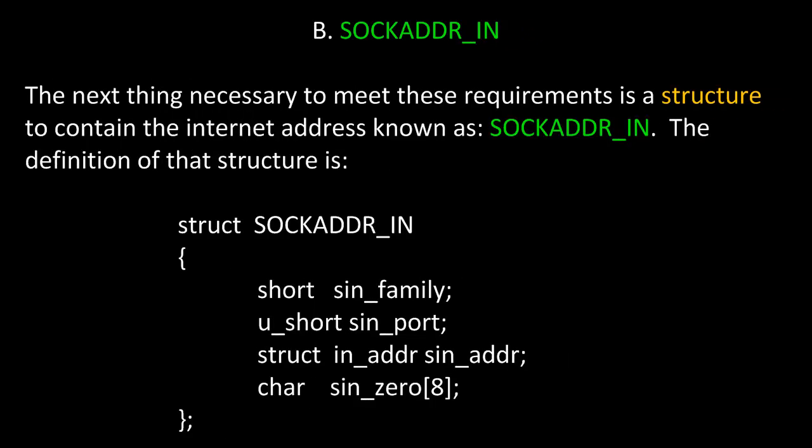The next thing necessary is a structure to contain the internet address, known as SOCKADDR_IN. The definition of that structure is as follows: struct SOCK_ADDR_IN. The data members include a short for the family, an unsigned short for the port, another structure to hold the IP address (IN_ADDR, sin_addr), and a character array which is usually always set to 0.